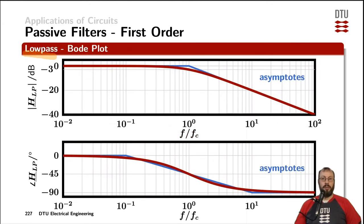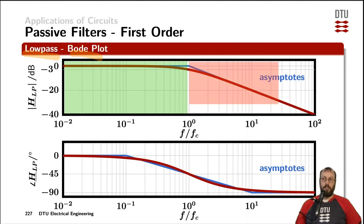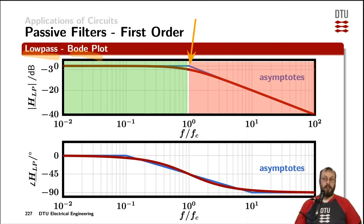Plotting the transfer function of a low-pass in a Bode plot gives this result. We have the passband area up to the corner frequency, shown in the middle of the diagram, and we look at two decades below and two decades above. The stopband is above the corner frequency and continues to infinity. At exactly the corner frequency, the amplitude is minus 3 dB down, and the asymptotes — the blue lines — have their corner, which is why it's called the corner frequency.